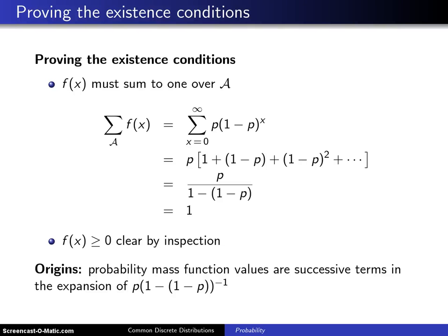You might recall that there are two existence conditions for probability mass functions. First of all, probability mass functions must sum to 1 over their support. And second of all, probability mass functions must be greater than or equal to 0 for all values of x.